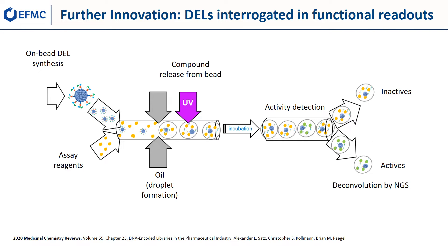Recently, Pagel and co-workers reported a significant innovation in the DEL field: a microfluidics-based system that allows a one-bead, one-compound — otherwise known as OBOC DEL — to be selected for activity instead of merely binding, which has the risk of identifying non-functional binding compounds. An OBOC library is assembled on a bifunctional TentaGel Rink-amide support by standard split-and-pool methods. The small molecule library member is attached to the bead through a photocleavable linker, and the DNA barcode separately attached through an orthogonal linker. The OBOC library is then loaded into a microfluidics device, where each bead is contained in its own droplet at the picolitre scale.